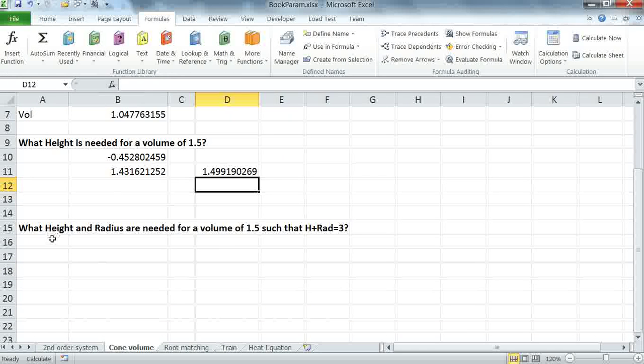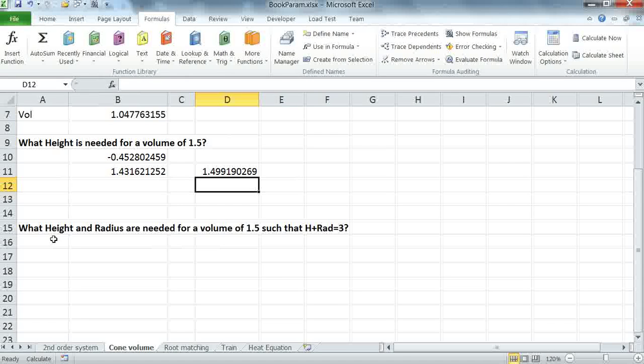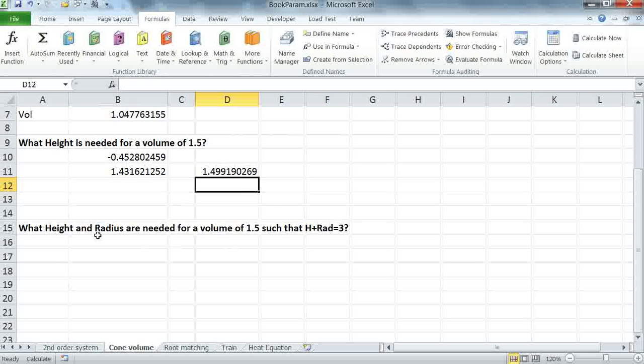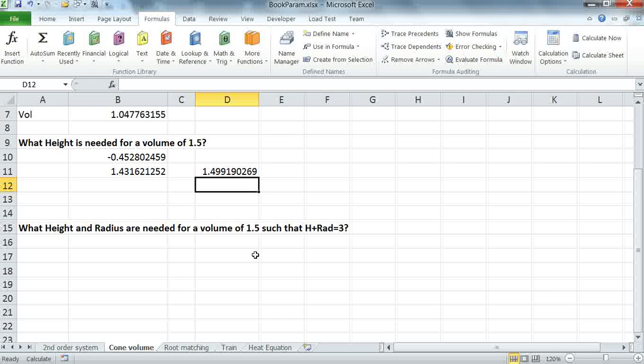Next, let's try a different example here where we are trying to vary both the height and radius to compute a volume of 1.5, but now we have the additional constraint that the height and radius add up to 3.